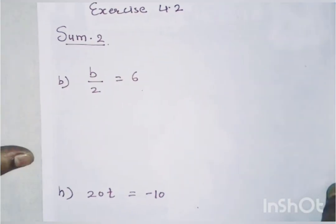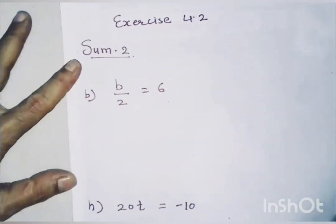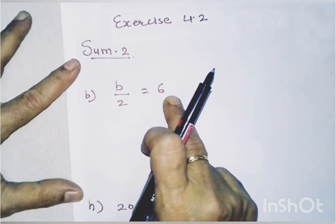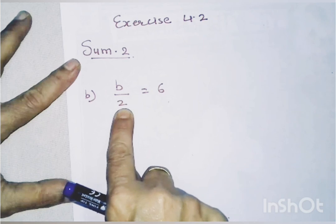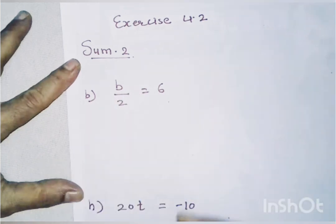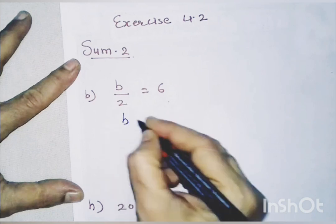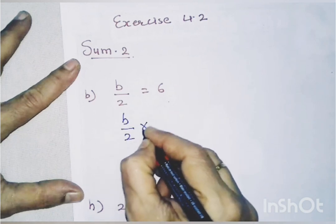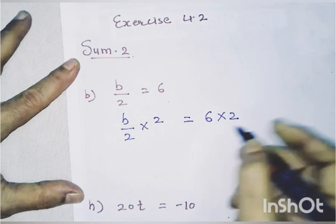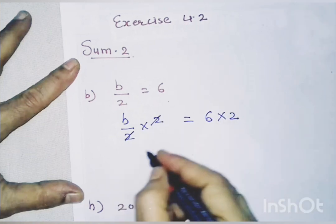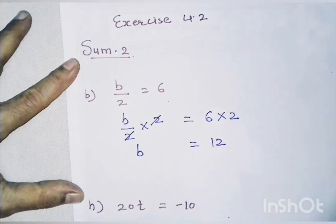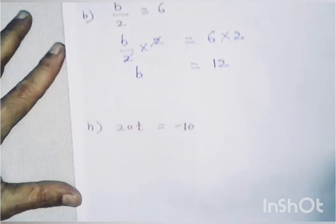Sum number 2: b upon 2 equals 6. We multiply both the sides by 2. So b upon 2 multiplied by 2 equals 6 multiplied by 2. The 2s cancel, giving b equals 12.